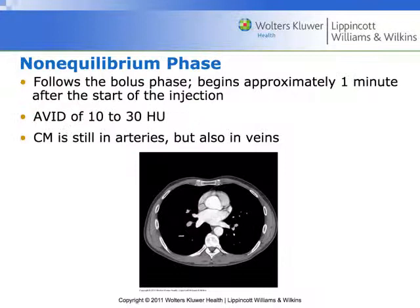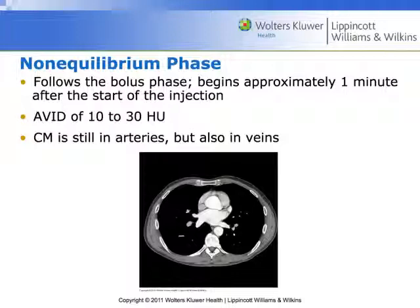Non-equilibrium phase — the text calls this venous phase. It follows the bolus phase and begins approximately 50 to 60 seconds after the start of the injection. The Hounsfield unit enhancement levels we're going to see is an increase of about 10 to 30 Hounsfield units for the structures. We may still have some contrast media in the arteries, but it's also going to be in the veins.